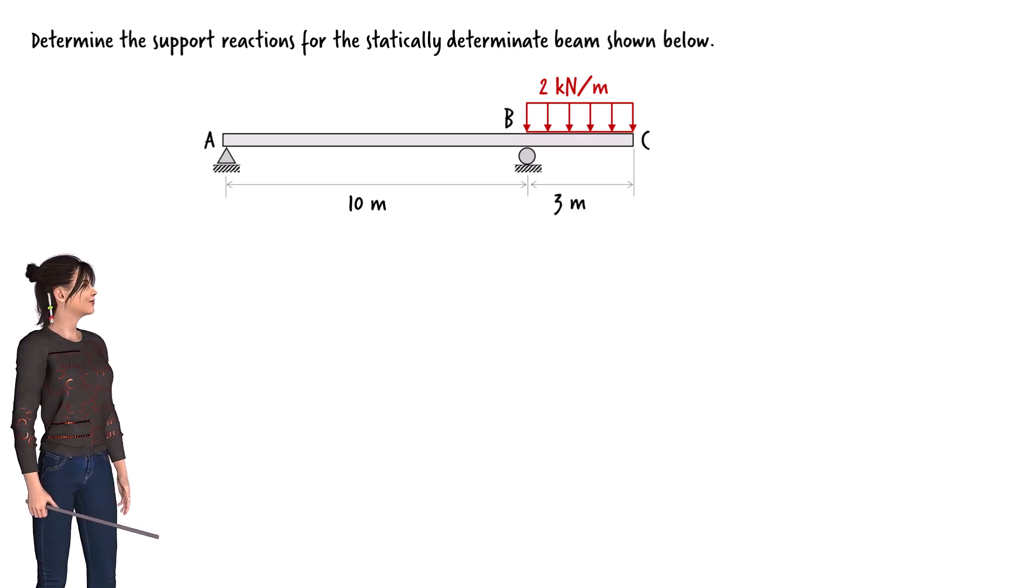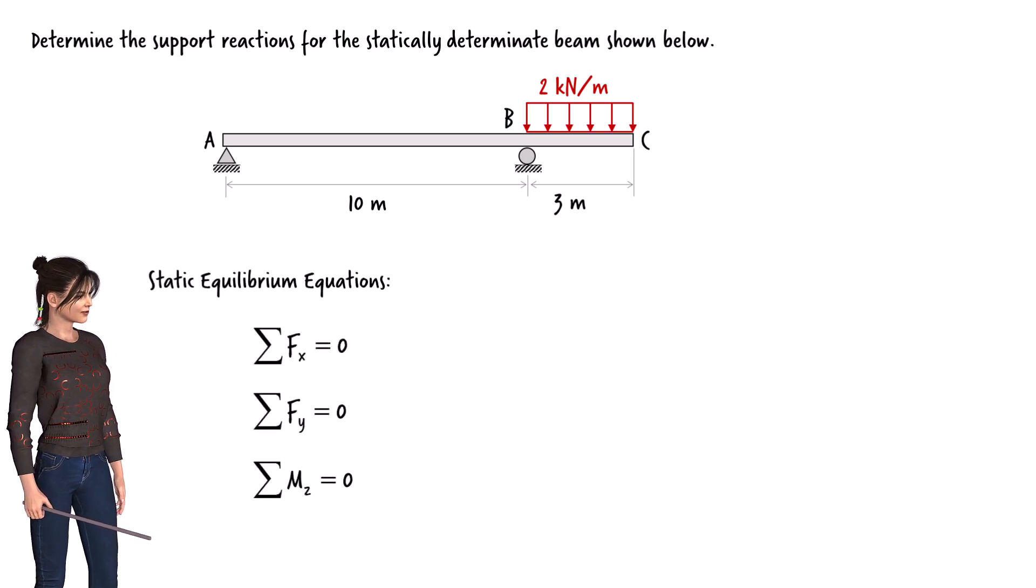Here is a statically determinate beam with an overhang. The beam is subjected to a uniformly distributed load. We want to calculate the support reactions which can be done using the static equilibrium equations.